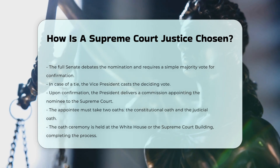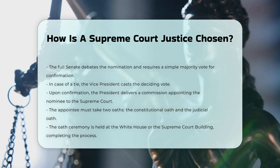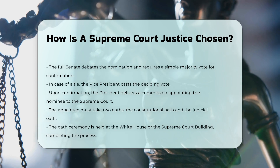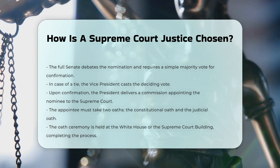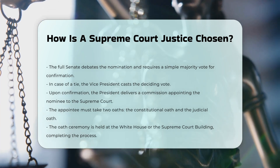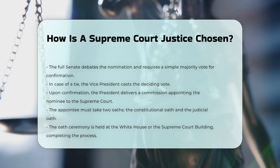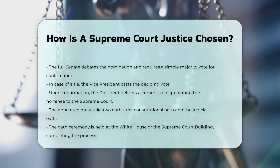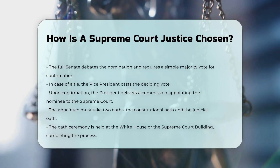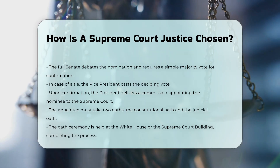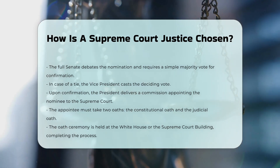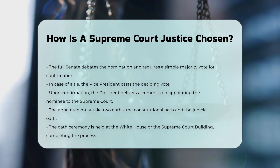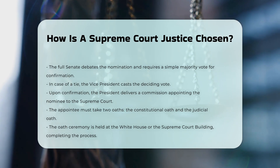Confirmation and Appointment. If the nominee is confirmed by the Senate, the President signs and delivers a commission officially appointing the nominee to the Supreme Court. The appointee must then take two oaths — the constitutional oath and the judicial oath — before assuming the duties of the office.